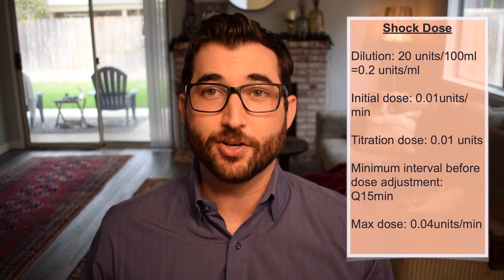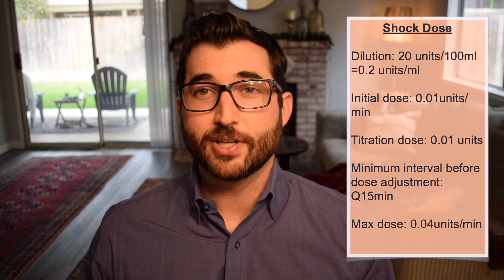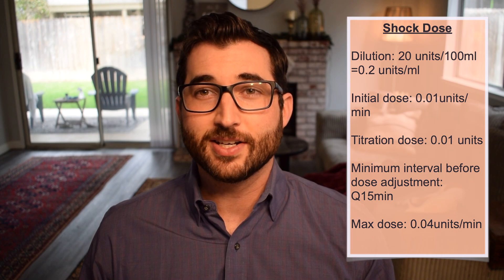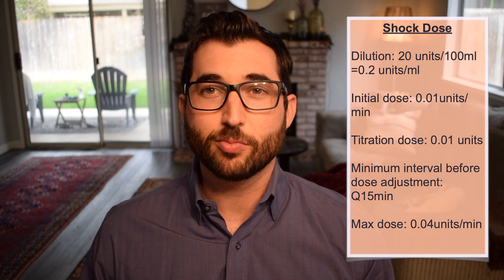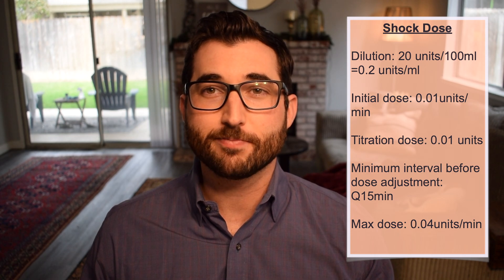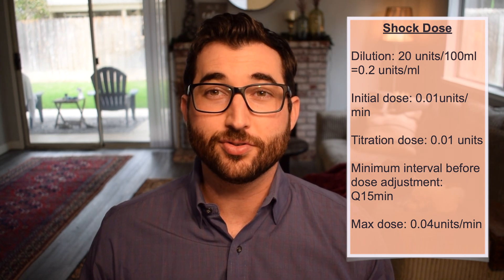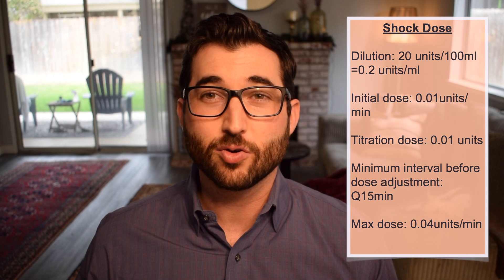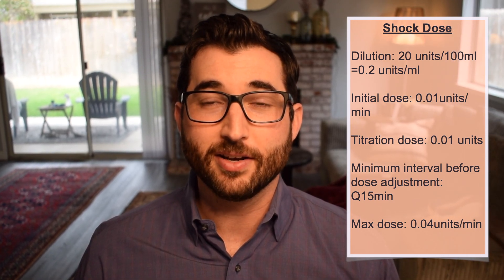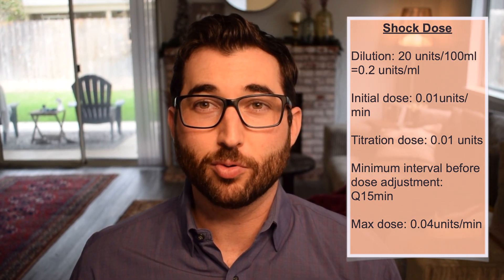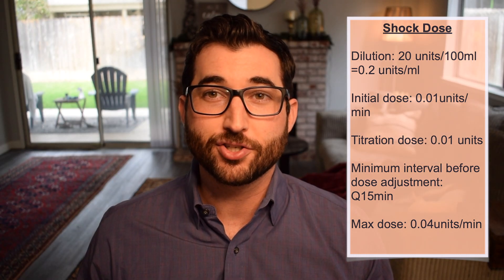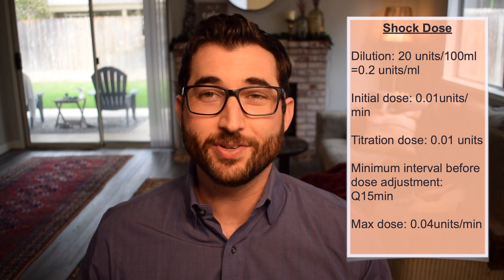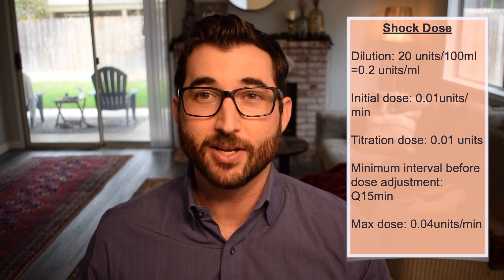So first let's talk about the shock dose. For dilution, you're going to find vasopressin in 20 units in 100 mLs, which equals 0.2 units per mL. Your initial dose is going to be 0.01 units per minute, and you can titrate by 0.01 units per minute every 15 minutes, for a max dose of 0.04 units per minute.